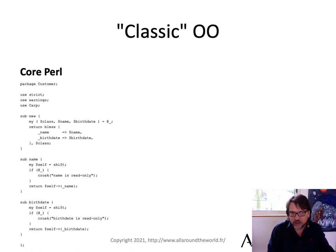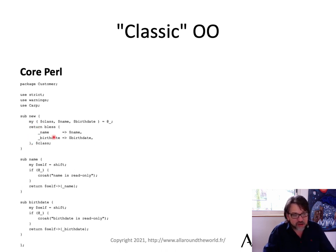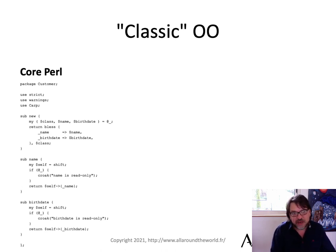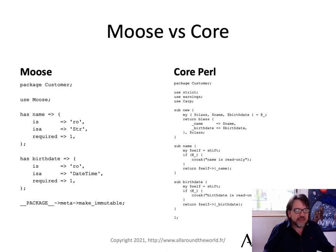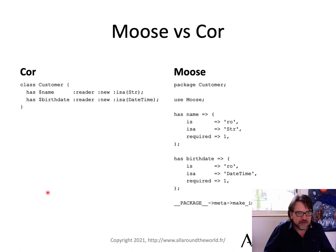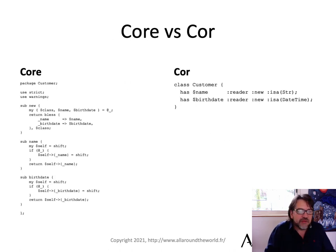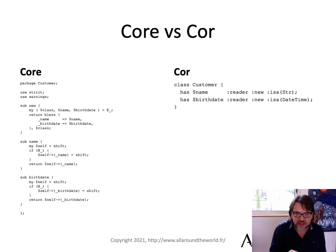Now we're going to look at classic OO, where we're going to bless a reference. You might notice underscores before some names — people might remember that in Perl a long time ago you would use underscores to indicate private data inside the object you weren't supposed to reach in and grab. Today we know how silly that is; you're supposed to go through the interface. This class in Moose looks like this — just two attributes, very simple. And here it is in Cor: I have my name, I have my birth date, I've got a reader for each, each is required in the constructor. You can see how much easier it is to construct an object — most of this becomes declarative now, except for the special behavior inside your actual methods.